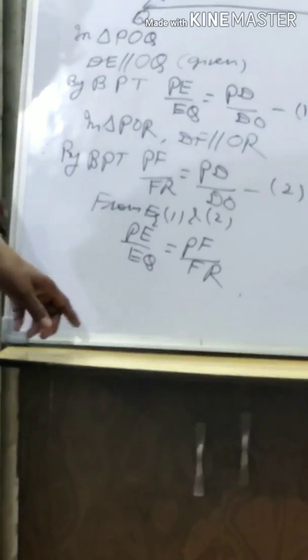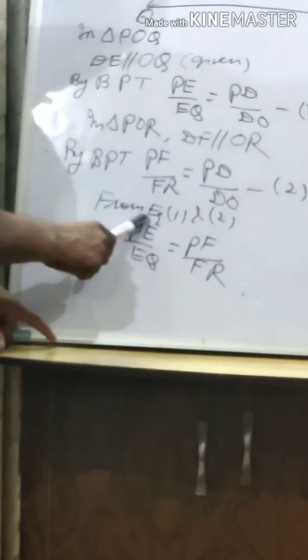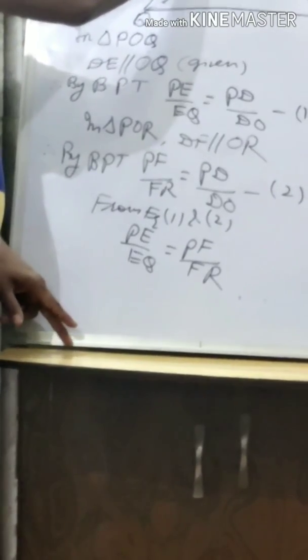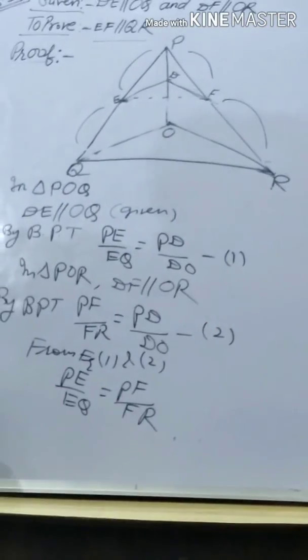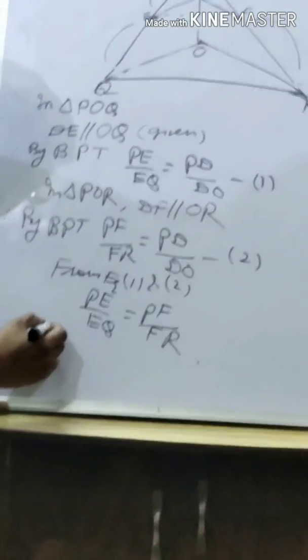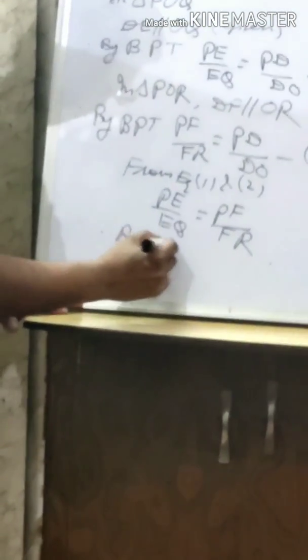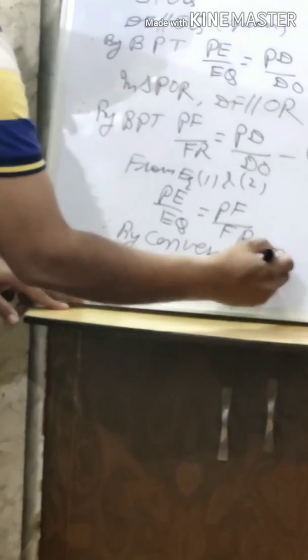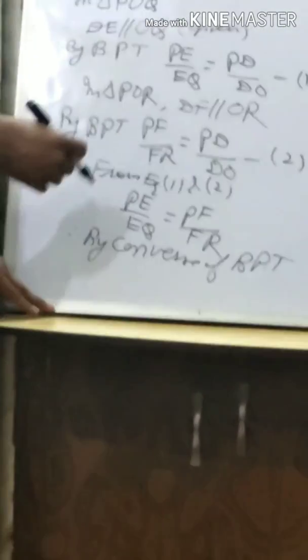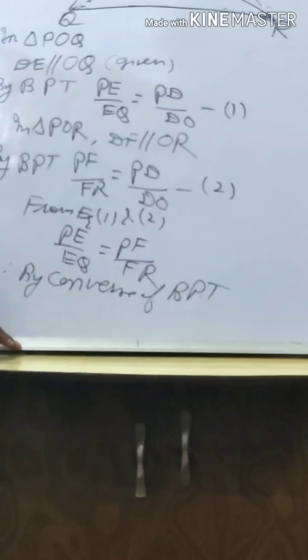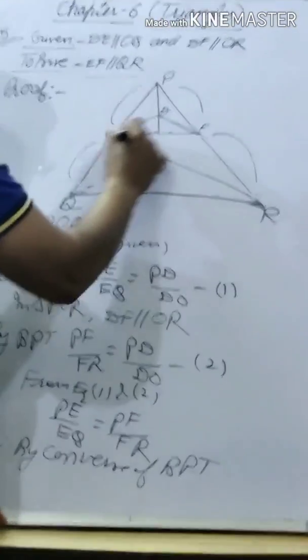Now, observe the ratios PE upon EQ and PF upon FR — these are in the big triangle OQR. Since two ratios are equal, by the converse of BPT, EF is parallel to QR. BPT says if lines are parallel the ratios are equal; converse of BPT says if ratios are equal the lines are parallel.